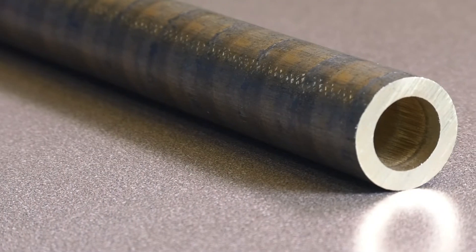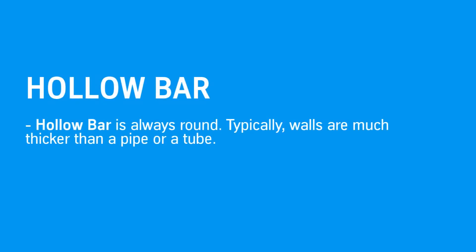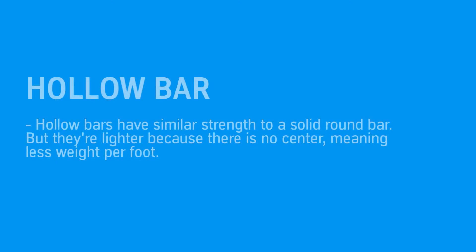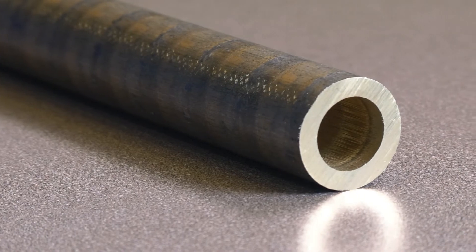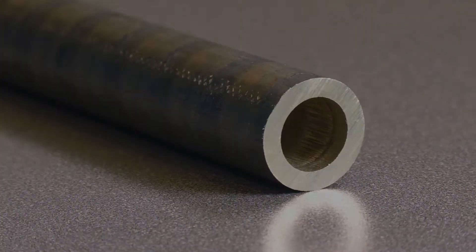A hollow bar is always round and it can look like a pipe or a tube. However, typically the walls will be much thicker. A hollow bar has the strength of a solid round bar, but since there is no center, there is less weight per foot, which can sometimes save you money. For your application, if you don't need the center, a solid round bar just would have more waste and more money spent on machining.